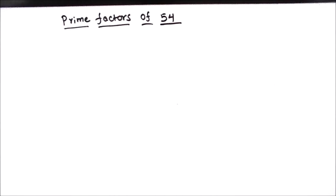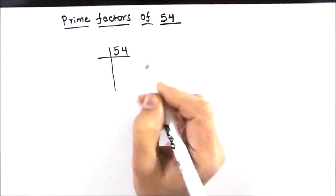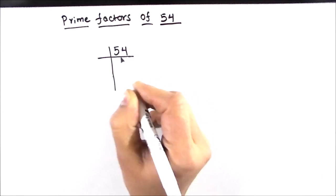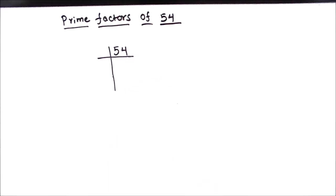Hello students, in this video we are going to find the prime factors of 54 using the prime factorization method. In the prime factorization method, we divide the number by prime numbers and express it as a product of its prime factors.